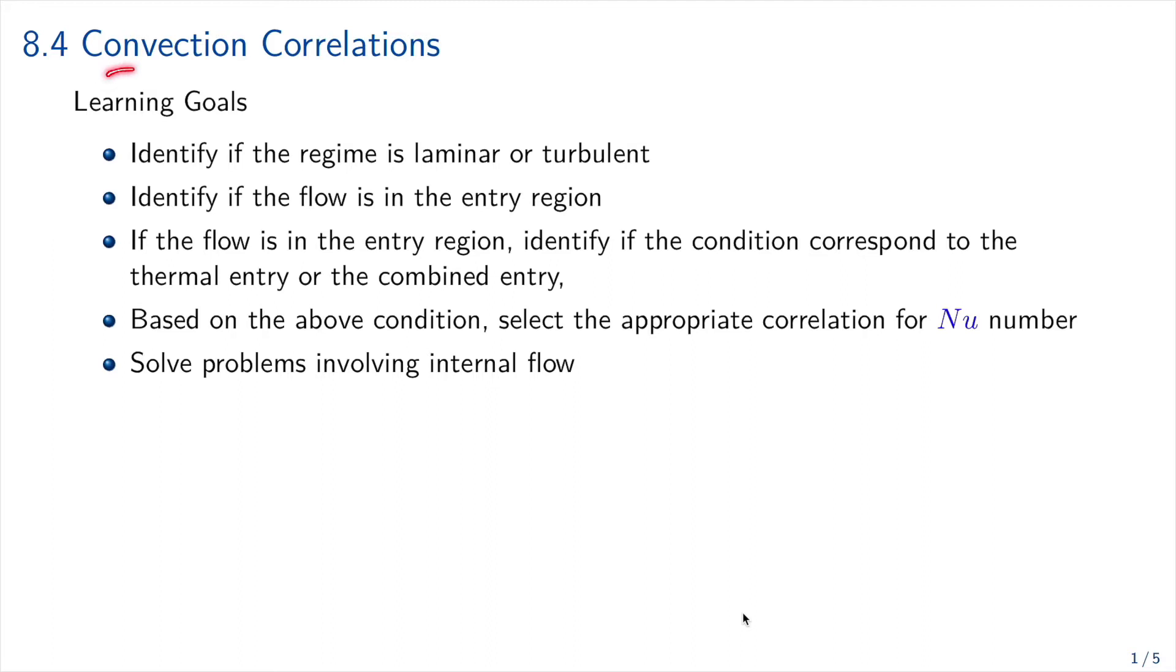Section 8.4 Convection Correlations for Internal Flow. In this section we are going to cover how to compute or how to select the convection correlations for different situations in which we have laminar or turbulent flow, or if we are located in the entry region. We have to identify if that condition corresponds to a thermal entry or combined entry.